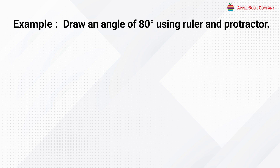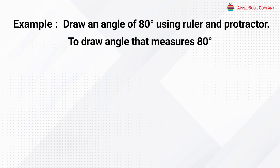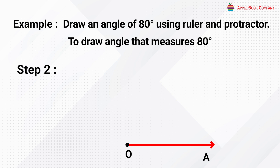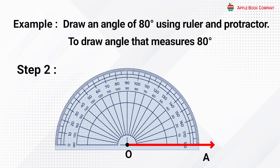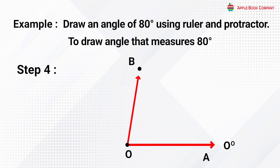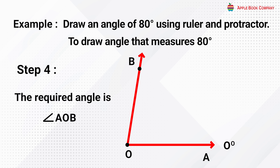Drawing angles: draw an angle of 80 degrees using a ruler and protractor. Step 1: draw a ray OA. Step 2: place the protractor so its center mark falls at O, the end point of the ray, which will be the vertex of the angle. Step 3: with the help of the scale, align ray OA with 0 degrees, then mark the point at 80 degrees and label it B. Step 4: remove the protractor and join O to B. The required angle AOB is formed.